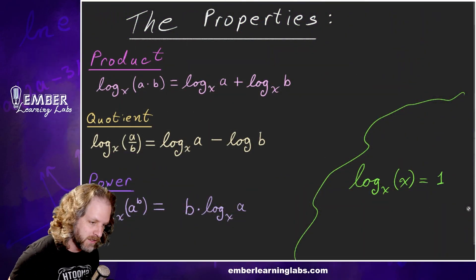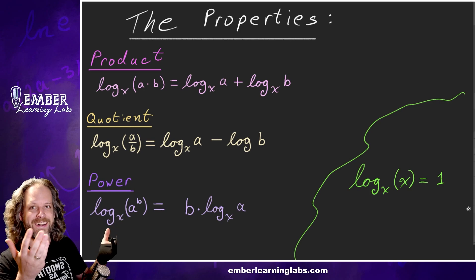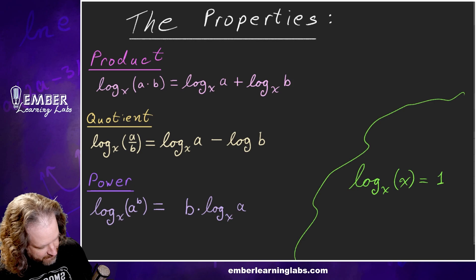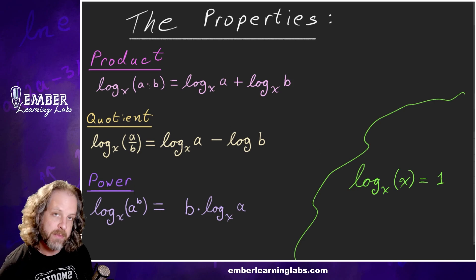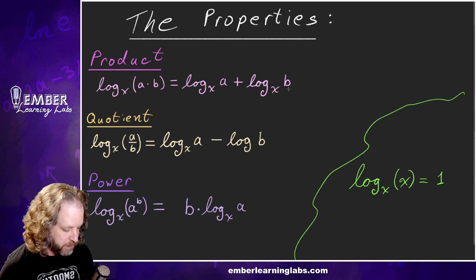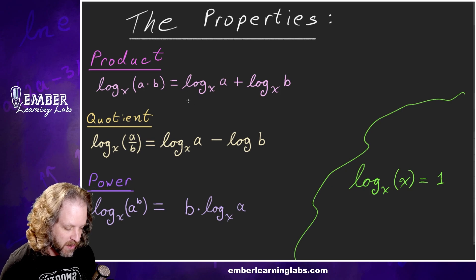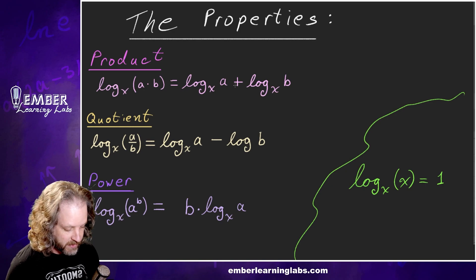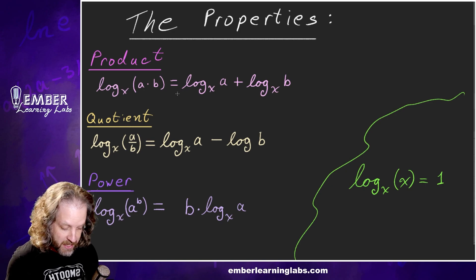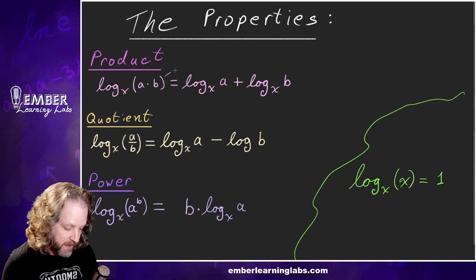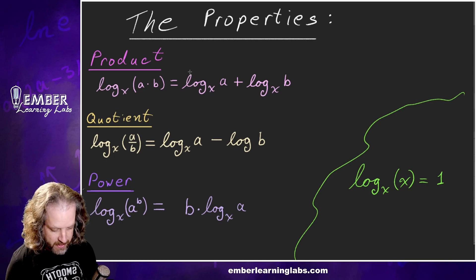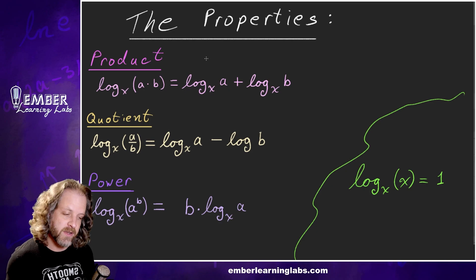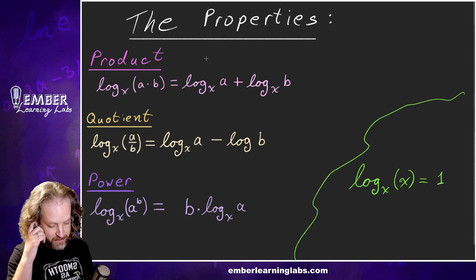So here are the properties. There's the product property: if we have a product in the argument of a logarithm, we can split that up into the log of the first one plus the log of the second one. This can be really useful either way. Remember that equals goes both ways, so we could start with one side and turn it into the other.